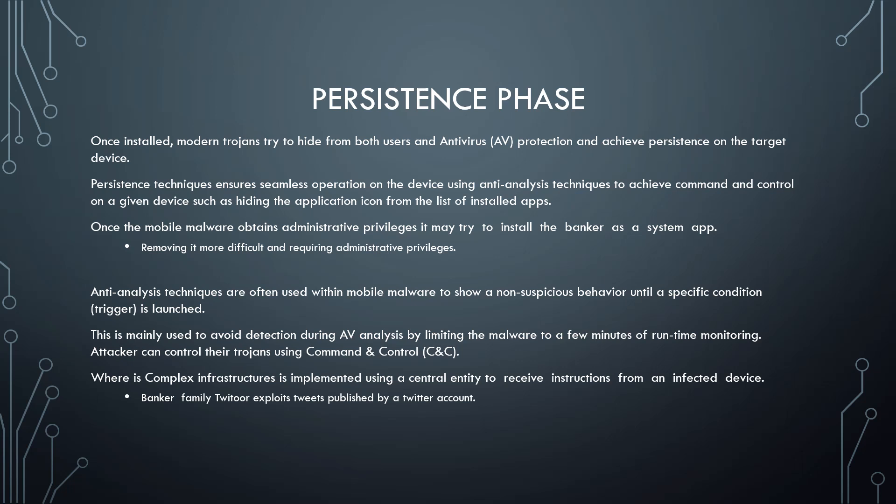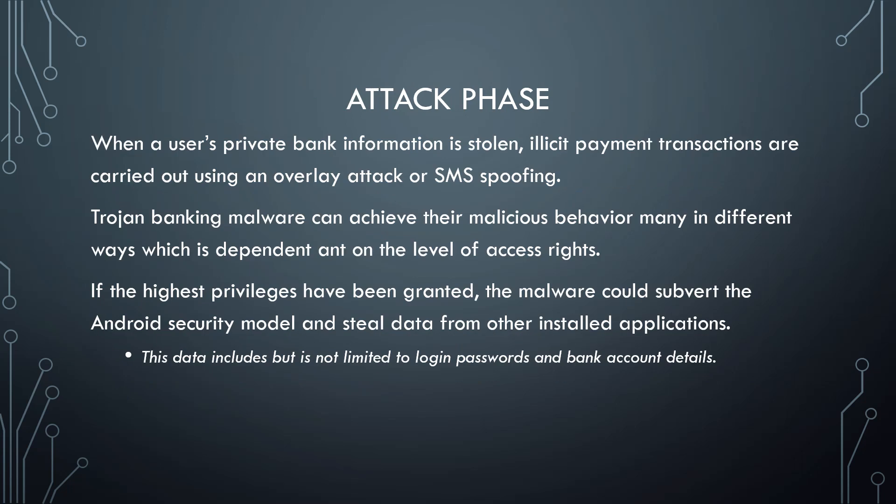An attacker can control their Trojan using a command and control server, where this complex infrastructure is implemented using a centralized entity to receive instructions from an infected device. In the attack phase, a user's private bank account information is stolen and illicit payment transactions are carried out using an overlay attack or SMS spoofing. Trojan banking malware can achieve malicious behavior in many different ways depending on the level of access rights.